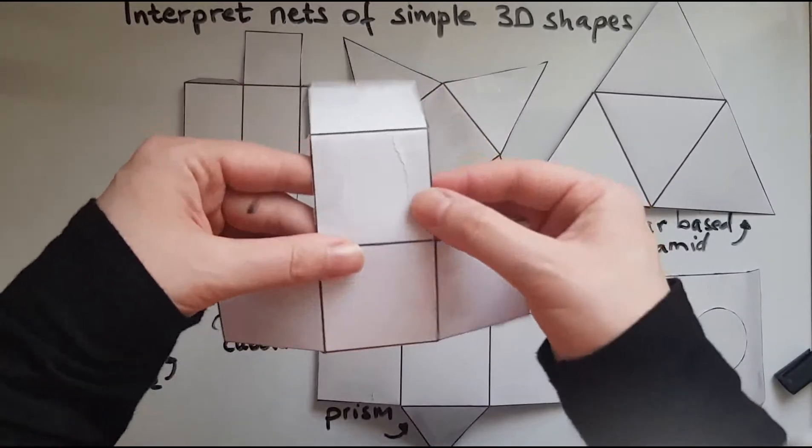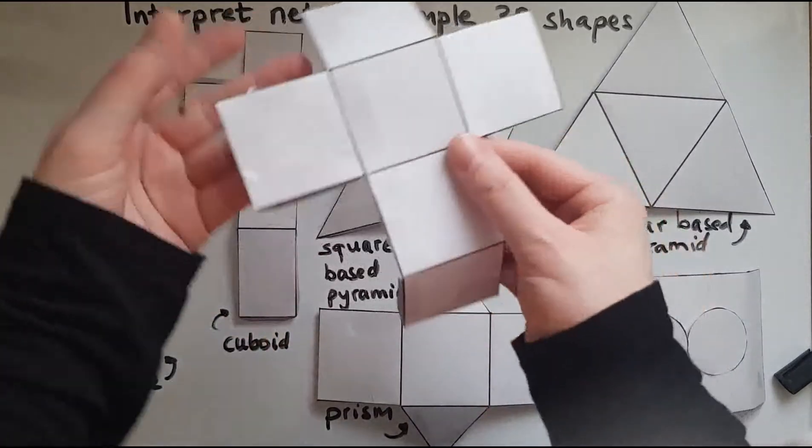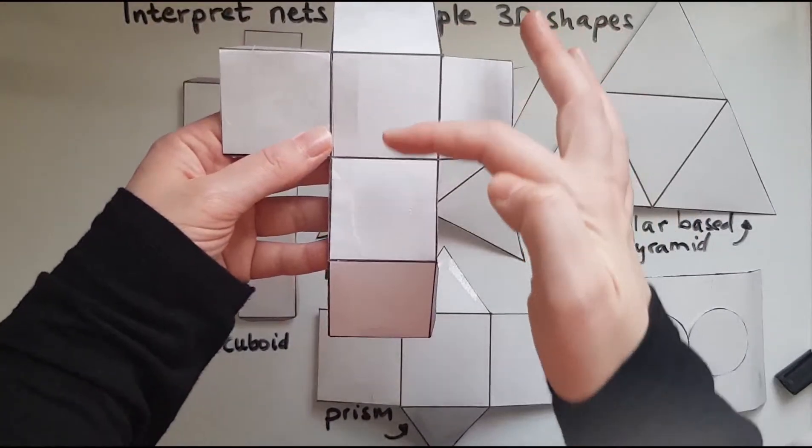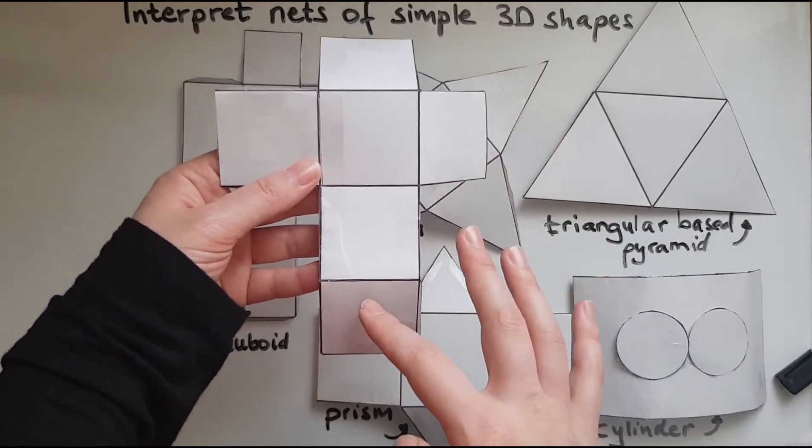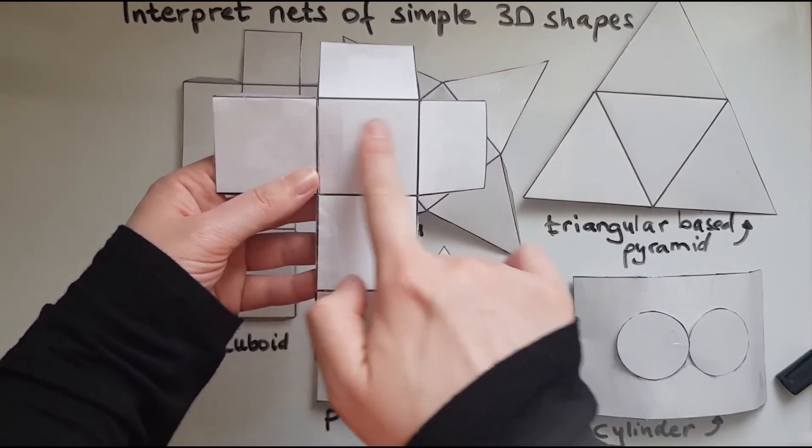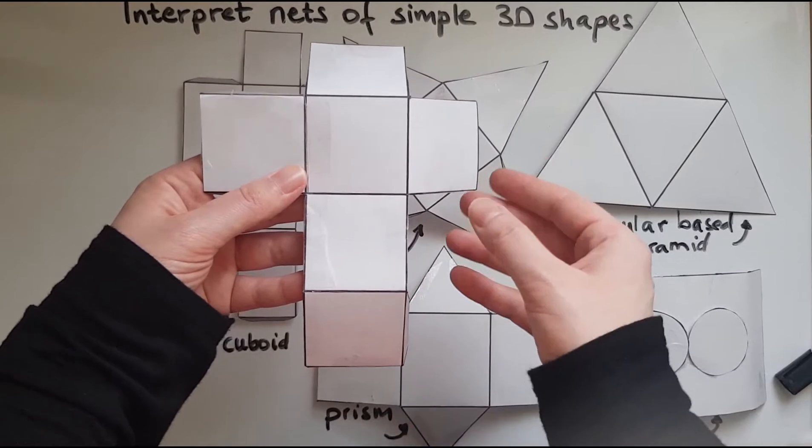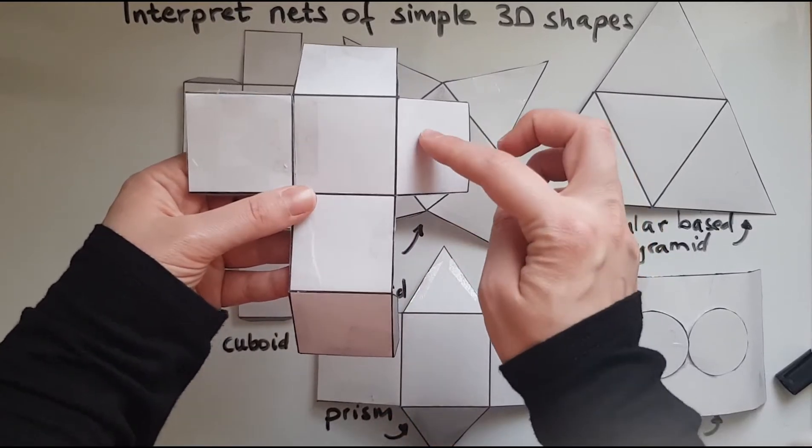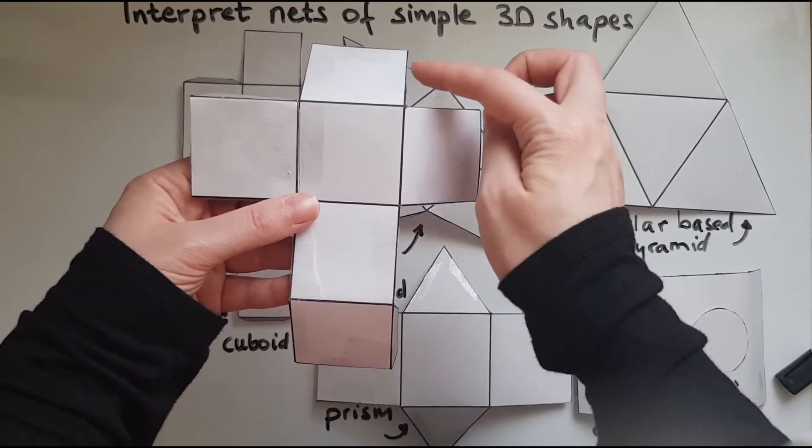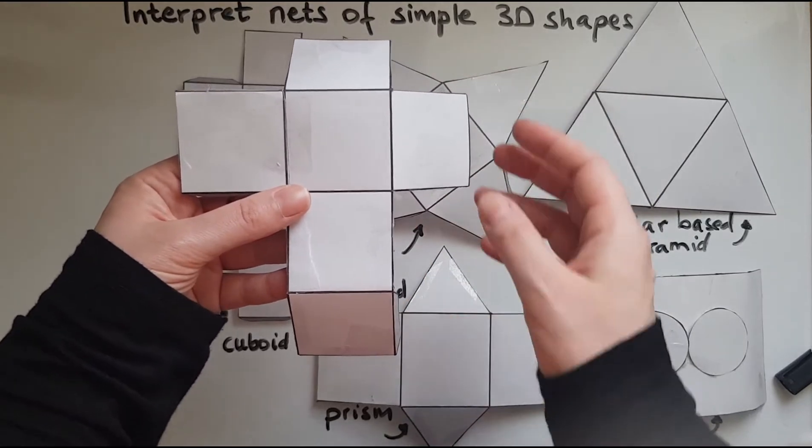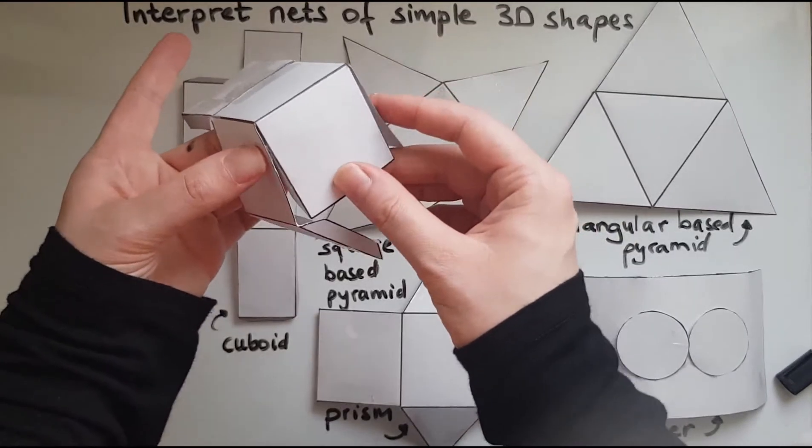Going back to the net we had four faces next to each other at the center. There's two faces on the side. So what would happen if I move this over here or there or here? It'd be the same thing as you can see.